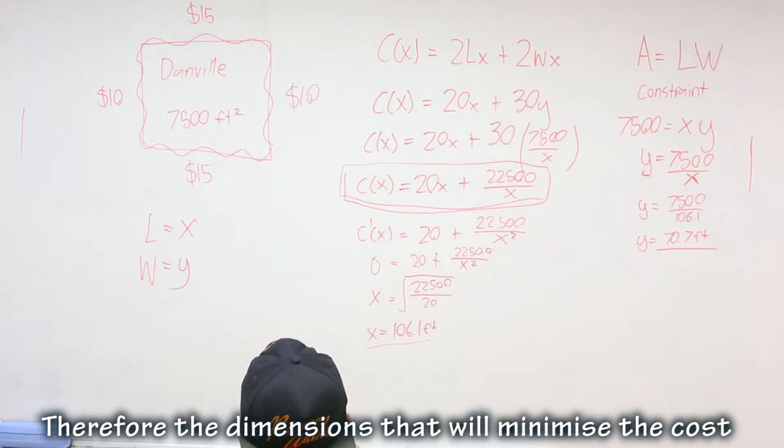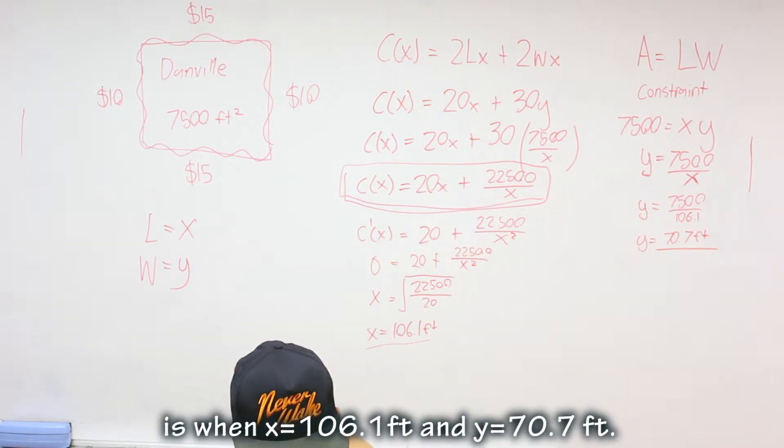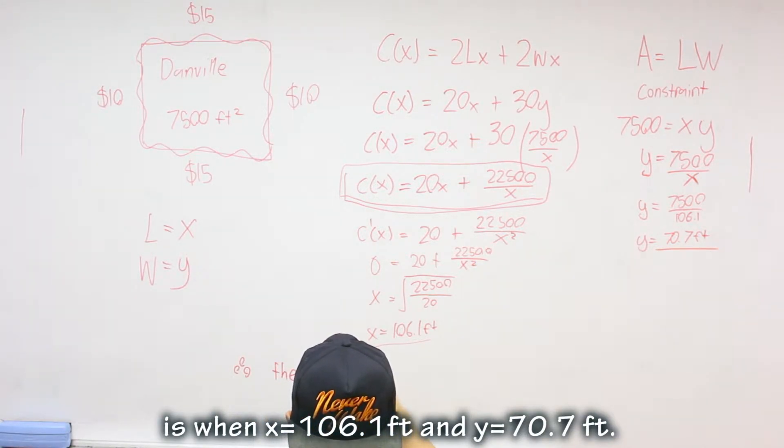Therefore, the dimensions that will minimize the cost is when X equals to 106.1 feet and Y equals to 70.7 feet.